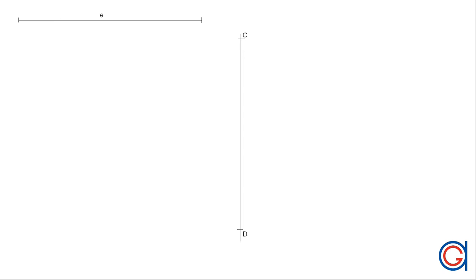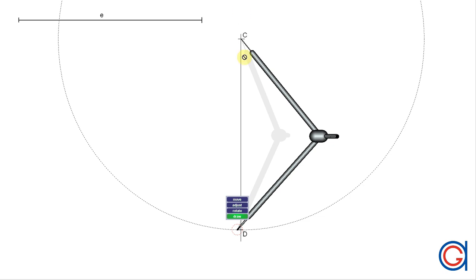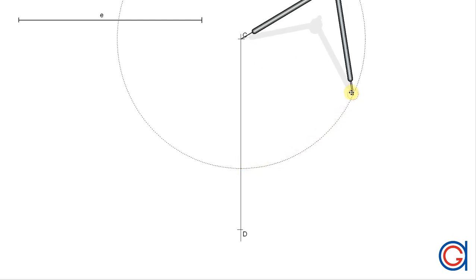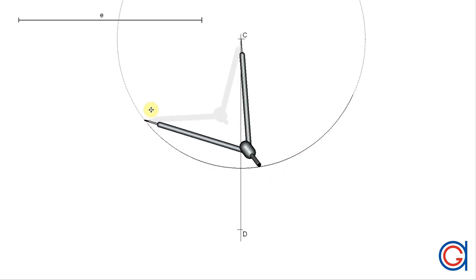The next step is to work out the perpendicular bisector of the line segment CD. To do this, setting our compass on the point C with a radius slightly longer than half the line segment CD, we are going to scribe an arc as can be seen here.